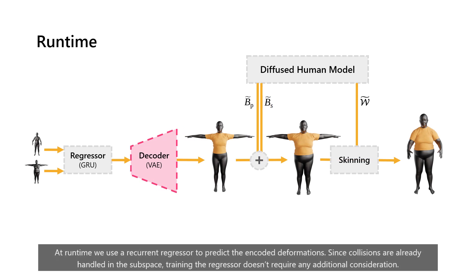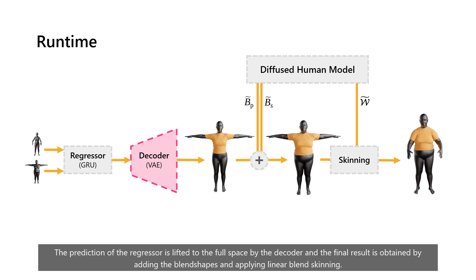At runtime, we use a recurrent regressor to predict the encoded deformations. Since collisions are already handled in the subspace, training the regressor doesn't require any additional consideration. The prediction of the regressor is lifted to the full space by the decoder, and the final result is obtained by adding the blend shapes and applying linear blend skinning.